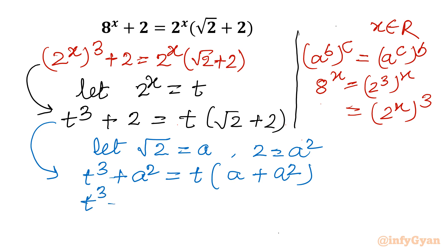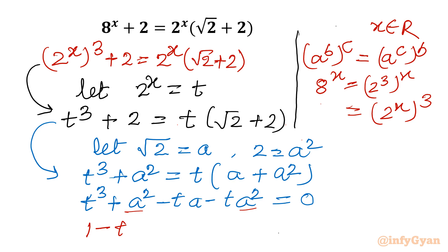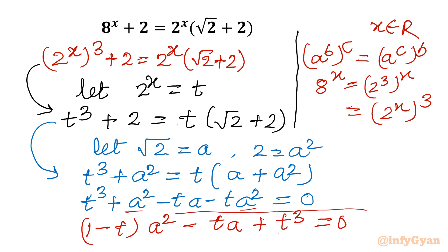Now expand and take all terms to one side. It becomes t³ + a² - ta - ta² = 0. Now framing this as a quadratic equation in a, I target the a² and a terms: (1 - t)a² - ta + t³ = 0. This is a quadratic in a, and we know a = √2.